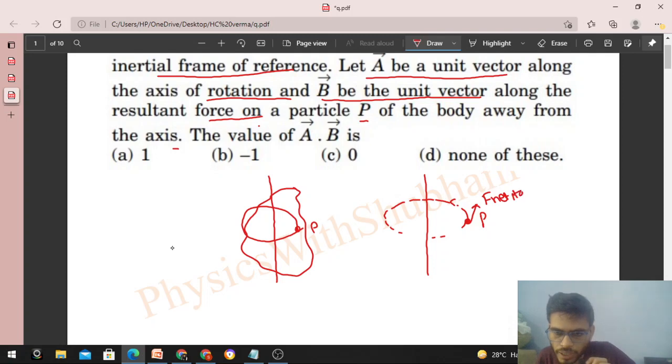Now what is net force in tangential direction? That will be mass of the particle into acceleration of the particle in tangential direction. And what is the tangential acceleration? That is rate of change of speed, dv by dt.